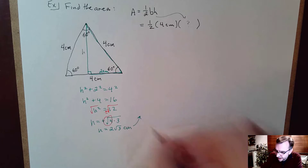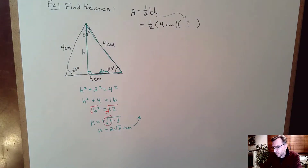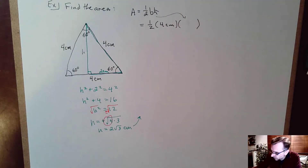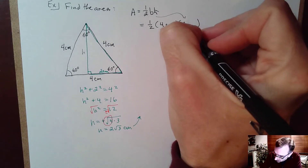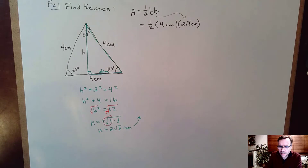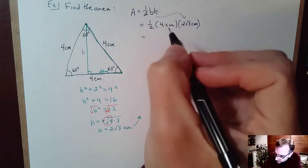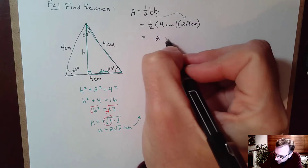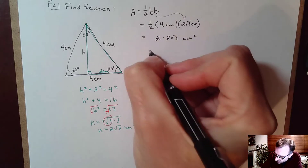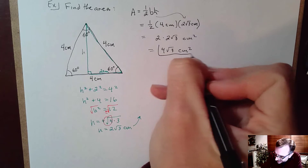With that, I can go back to the original problem where I was calculating the area and replace the height with 2 square root of 3 centimeters. So 1 half base times height: 1 half times 4 is 2, times 2 square root of 3, and centimeters times centimeters is centimeters squared — giving us 4 square root of 3 centimeters squared. That's the exact answer.